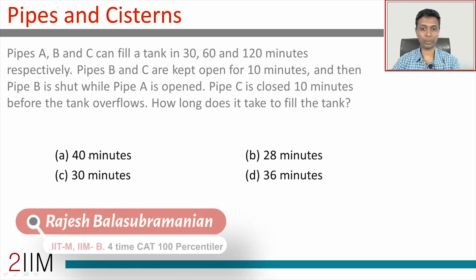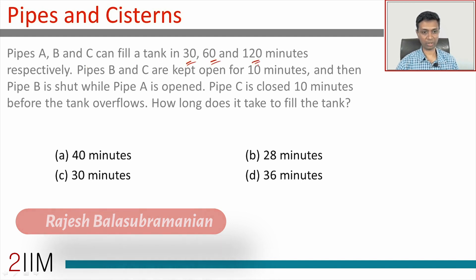Let's look at this question. I'm going to assume you've already read through it, so read through it rapidly and try solving it. Pipes A, B, and C can fill a tank in 30, 60, and 120 minutes respectively.